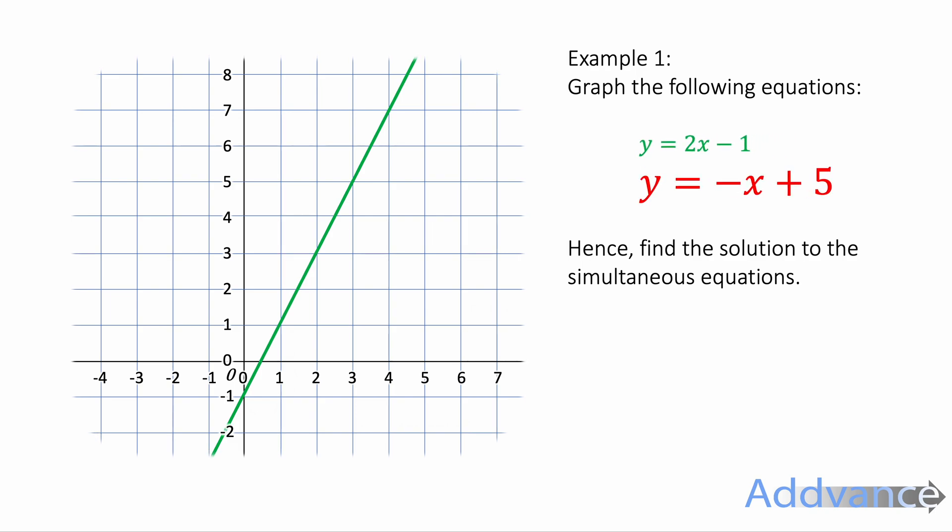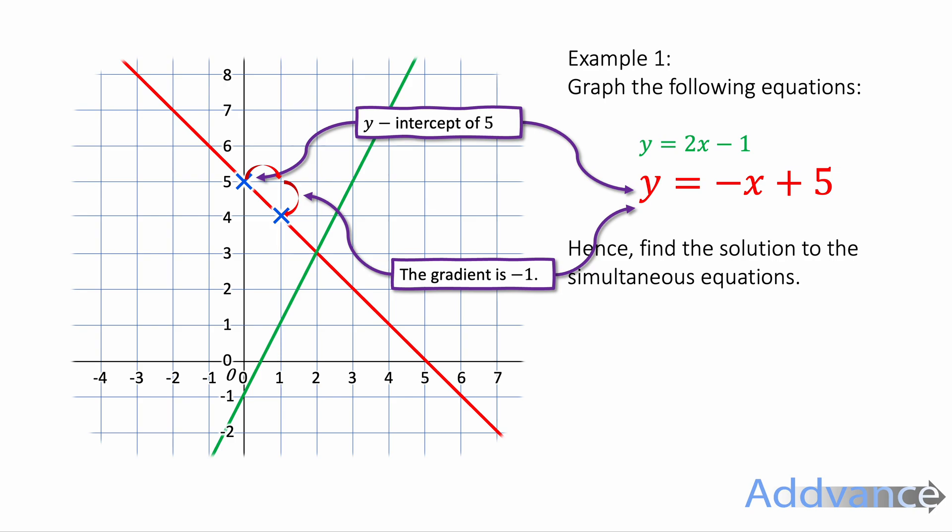Now we've also got y equals minus x plus 5, and that has a y-intercept of 5. The number in front of the x is minus 1x. The minus x means minus 1x. That means it's got a gradient of minus 1. So if it goes across 1 square it's going to go down 1. The gradient is negative. And so we go through these two points here and we can connect those two up with a ruler. You can also graph these straight lines using a table of values and plot a straight line graph the slower way. But both ways work.